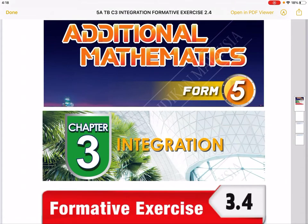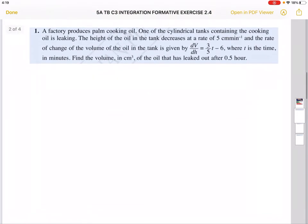Hello and welcome. This is the Additional Mathematics Form Five textbook, Chapter 3, Formative Exercise 3.4 discussion. This practice only has three questions, so it's quite short. Let's get going. The first one: a factory produces palm cooking oil. One of the cylindrical tanks containing cooking oil is leaking, so the height of the oil in the tank decreases at this rate. We have to write dh/dt equals negative 5.